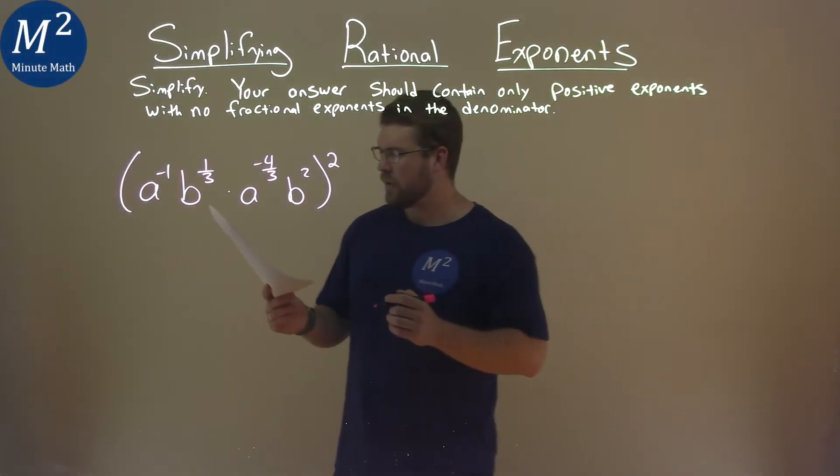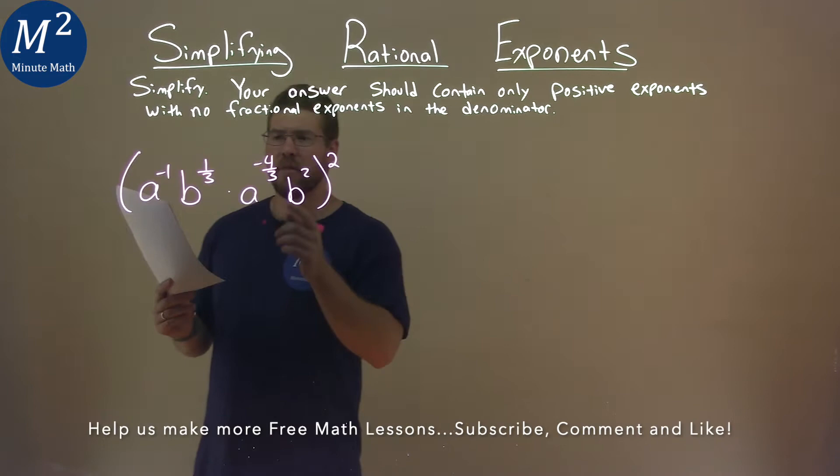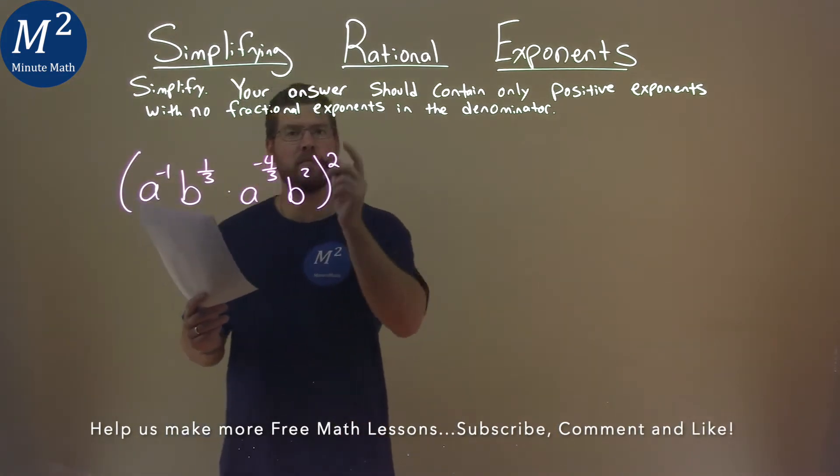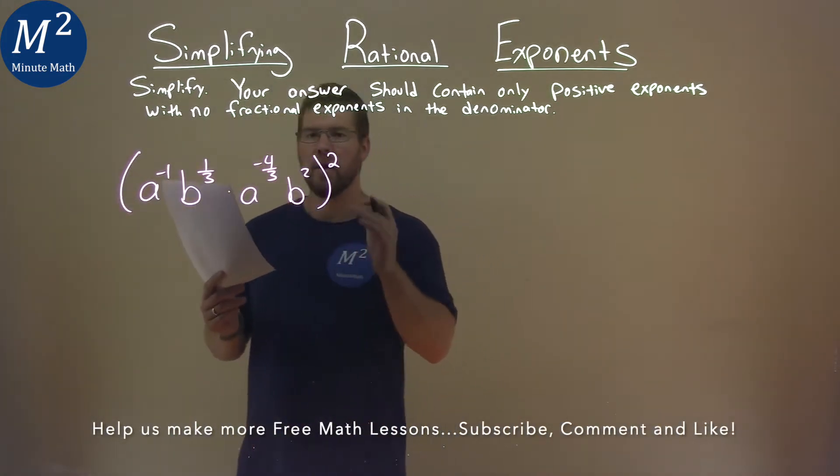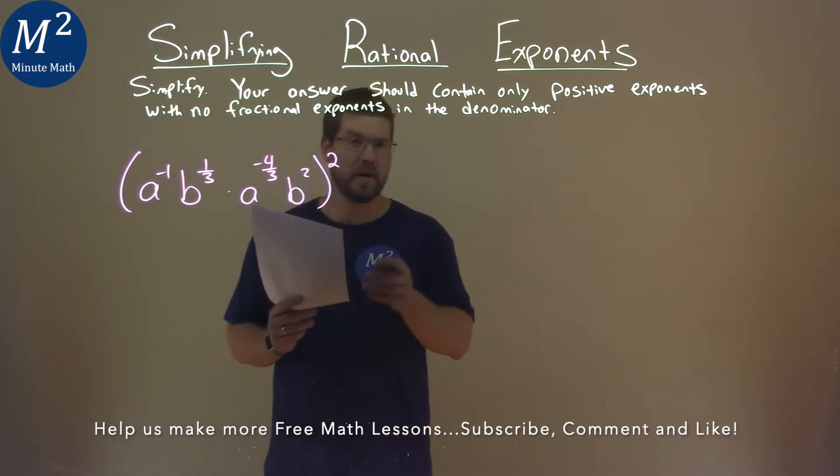We're given this problem right here: a to the negative 1 power, b to the 1/3 power, times a to the negative 4/3 power, times b squared, all to the 2nd power, and we've got to simplify.